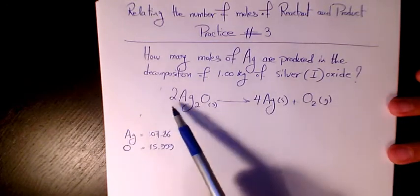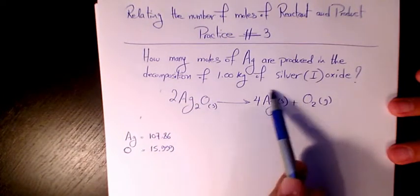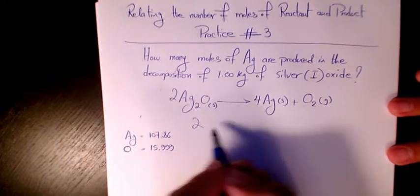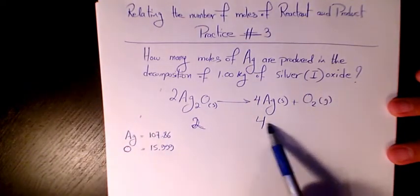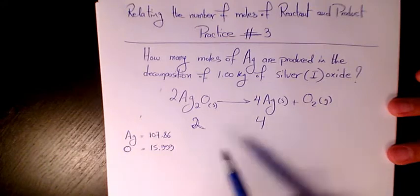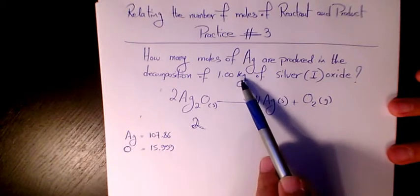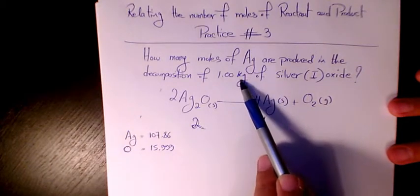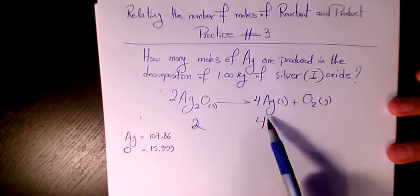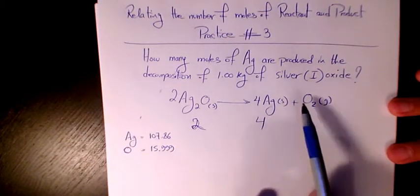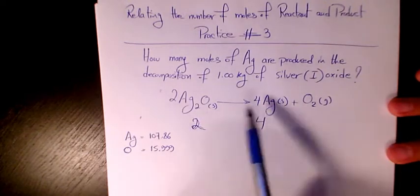For every 2 moles of Ag2O we produce 4 moles of Ag. We need to estimate how many moles of Ag are produced when 1 kg of silver(I) oxide decomposes. That's in terms of mass—in terms of kilograms—we need to convert it to number of moles. Stoichiometry is a relationship between the number of moles of reactants and products, and it's related to their coefficients or stoichiometric factors.